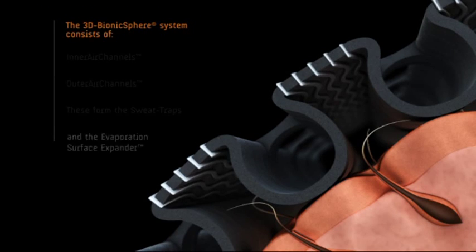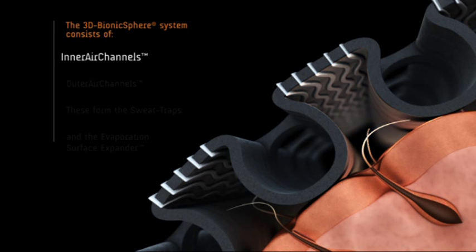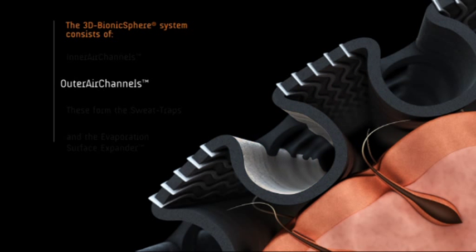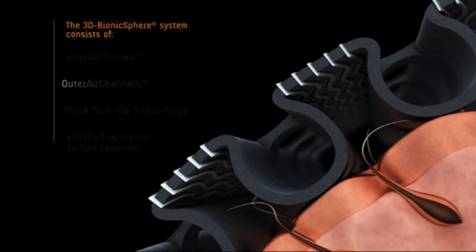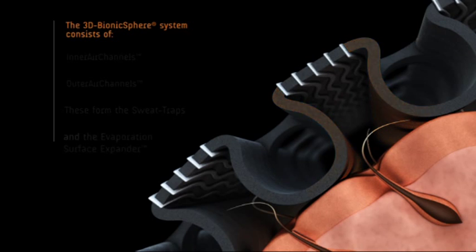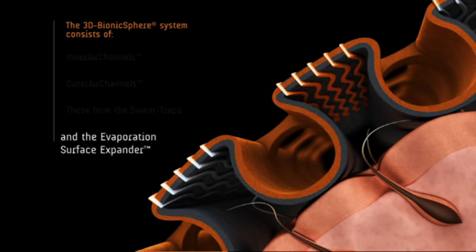The 3D Bionic Sphere system consists of inner air channels and outer air channels. These form the sweat traps and the evaporation surface expander.